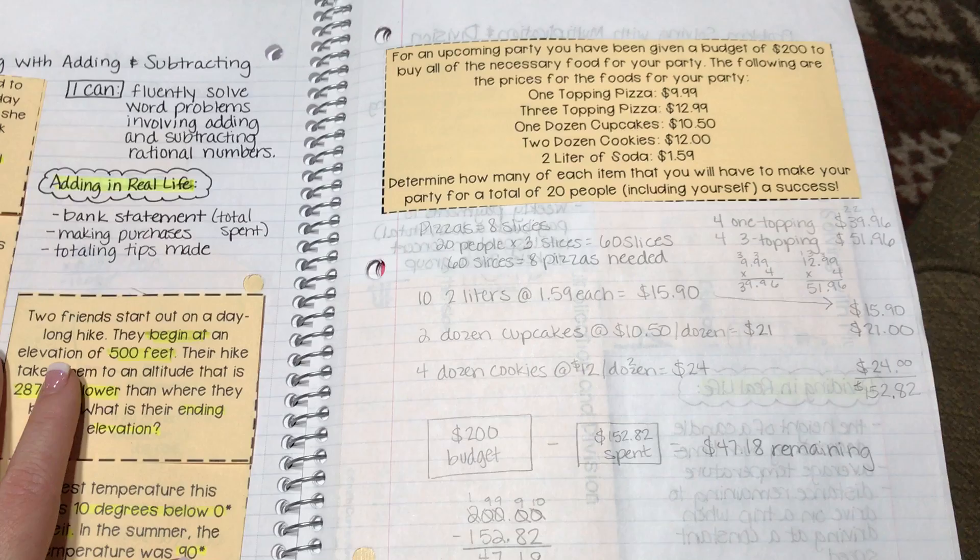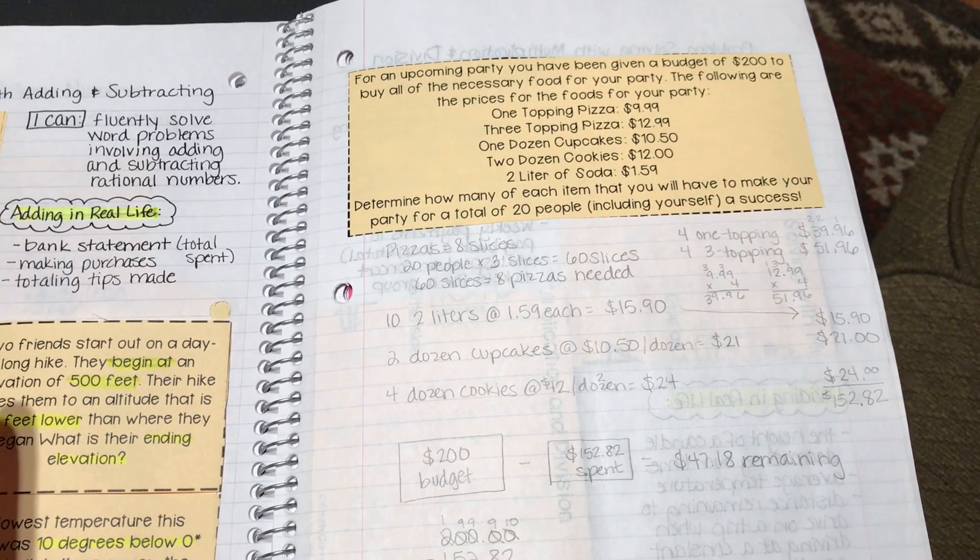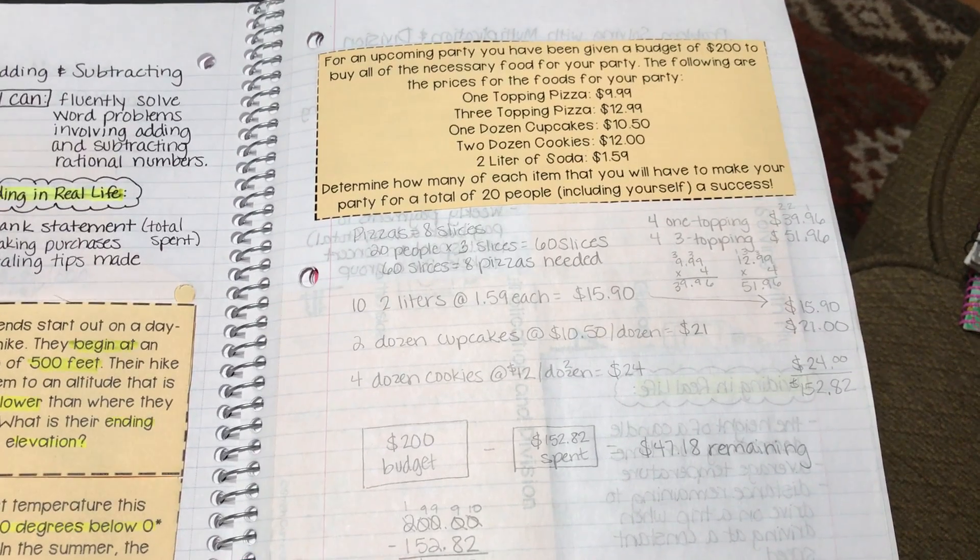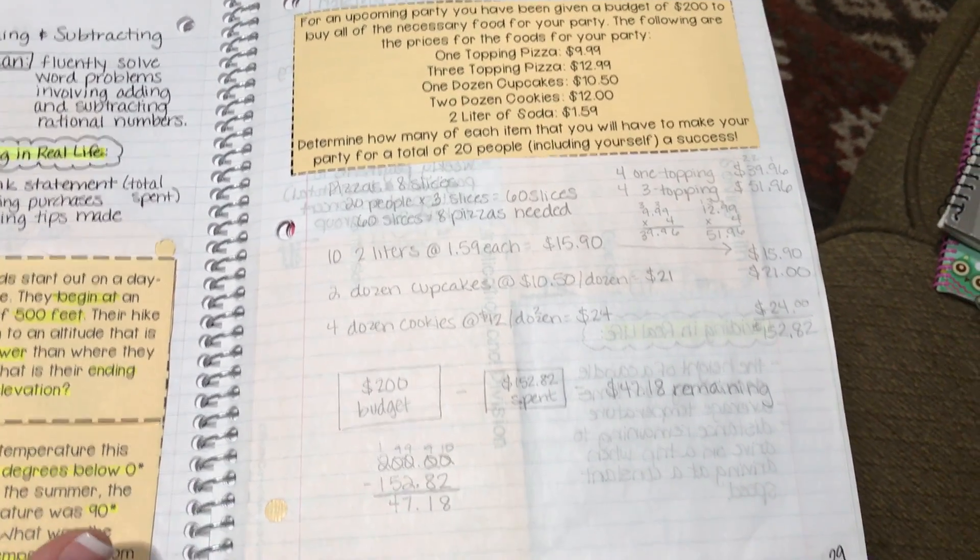The output activity for this is they're planning an upcoming party and so this is completely up to them. They have to decide with the budget of $200 how are they going to feed these 20 people including themselves, and they go through step by step. It's kind of fun.